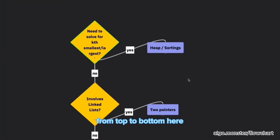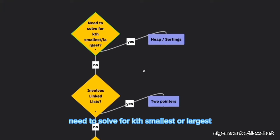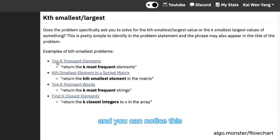Alright, so let's walk through the flowchart from top to bottom here. The first one is need to solve for kth smallest or largest. What's this one about, Kevin? For this one, I think pretty simple. In the problem, they'll ask you specifically to solve for the kth smallest or kth largest value or element of some problem. You can notice this by just searching for the phrase k most frequent here, for example, or kth smallest element, most, k closest. They're all about the same phrase. And once you've identified this, then you can put this in the kth smallest or largest category.